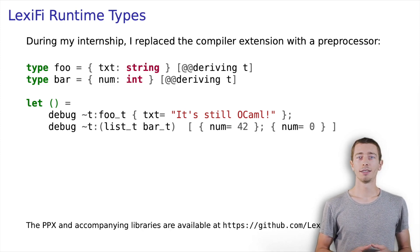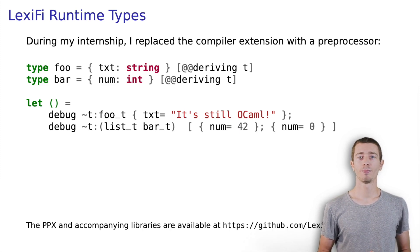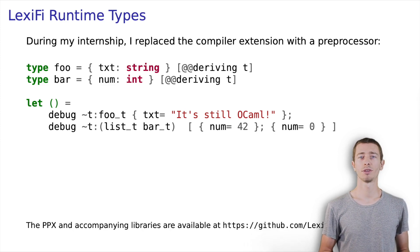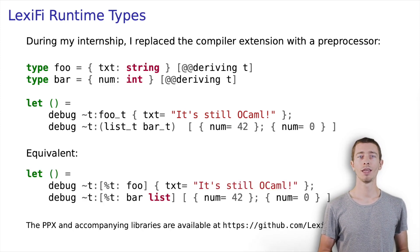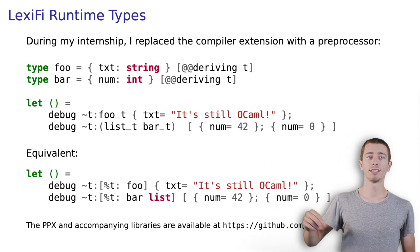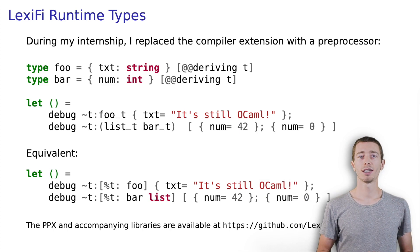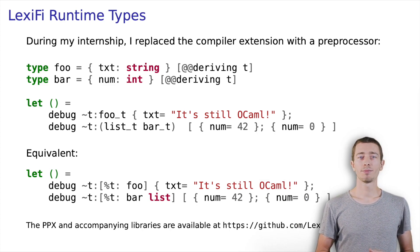In the example on the left, you can see that they become available under the name of type underscore t. Type variables, as in alpha list, are represented as functions. Consequently, list has to be instantiated before use. In the example, I do that by calling list_t with argument bar_t. Equivalently, I could instruct the PPX to handle the instantiation for me. This happens with the syntax in the lower part.